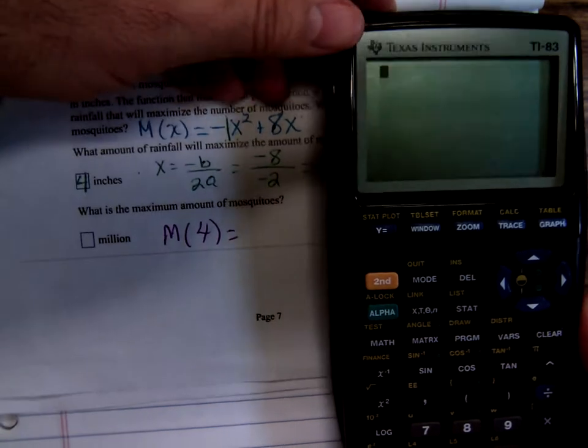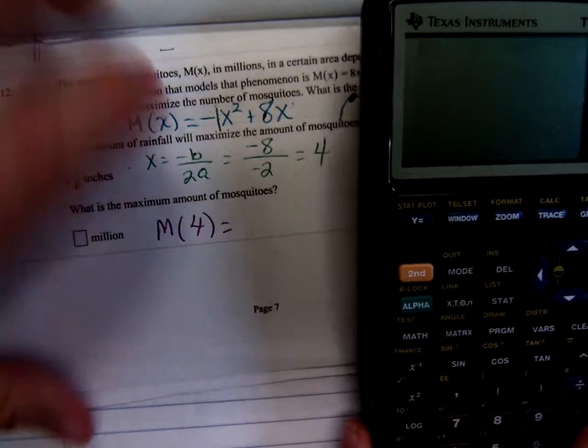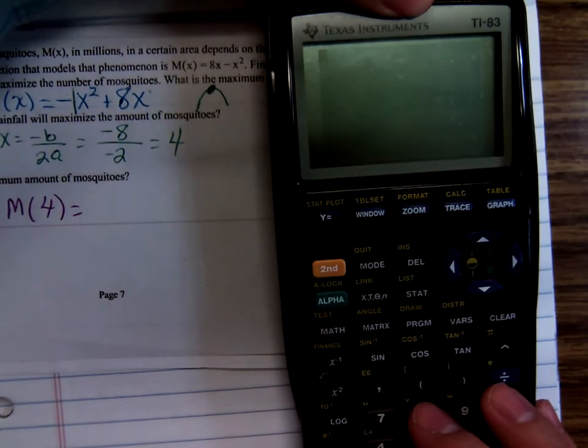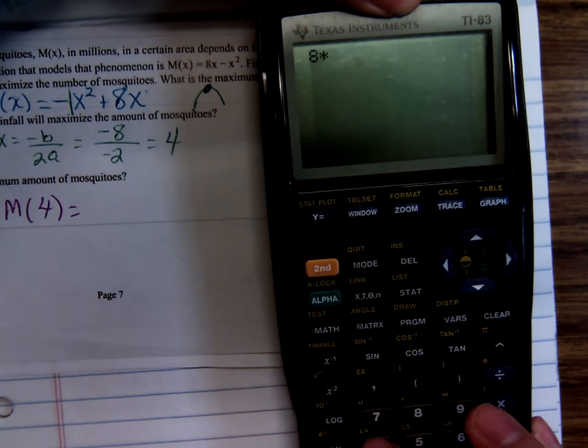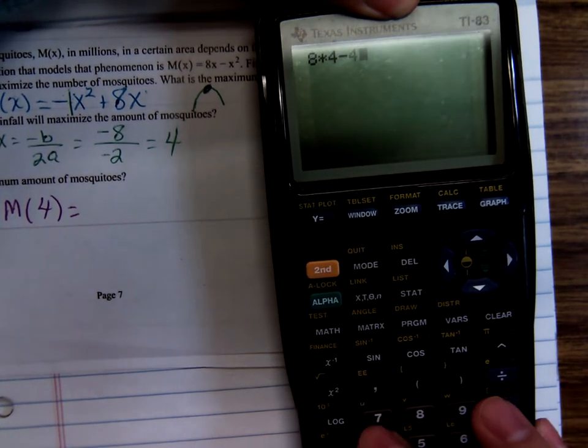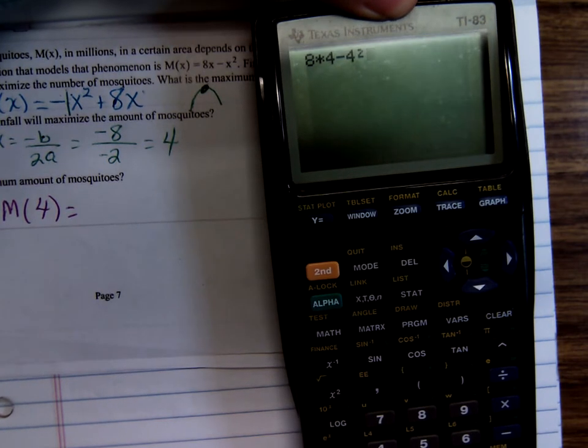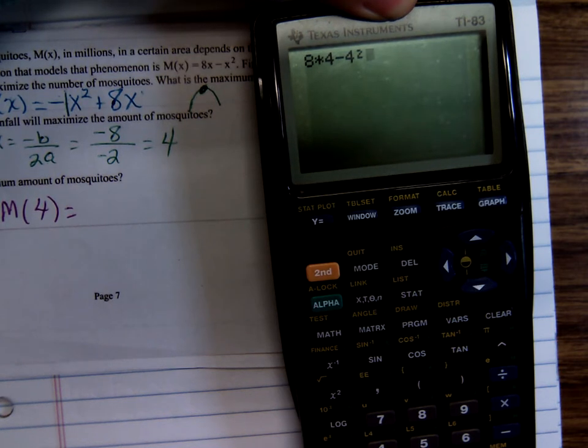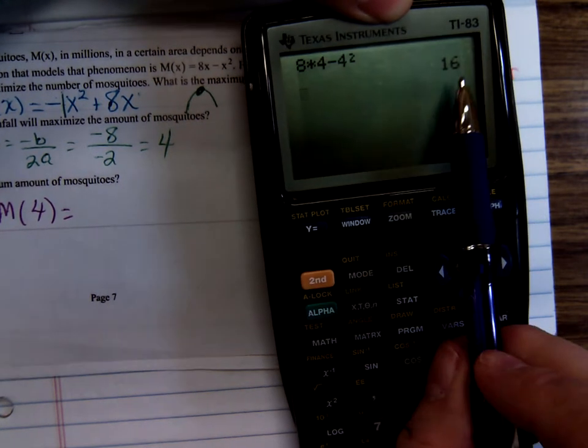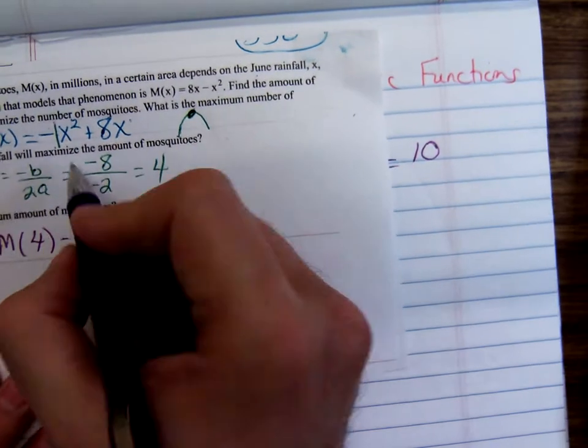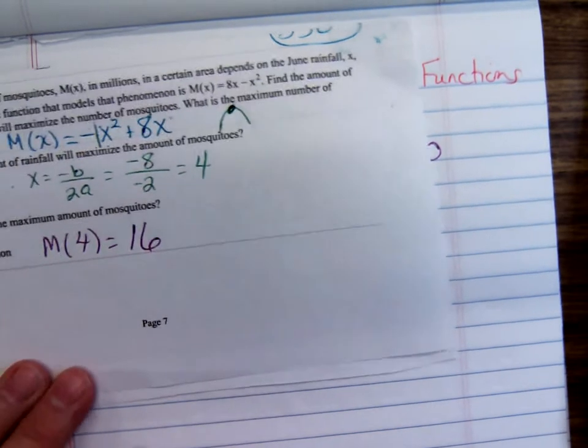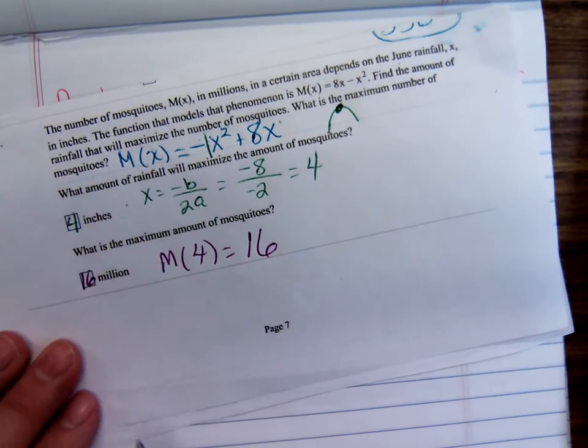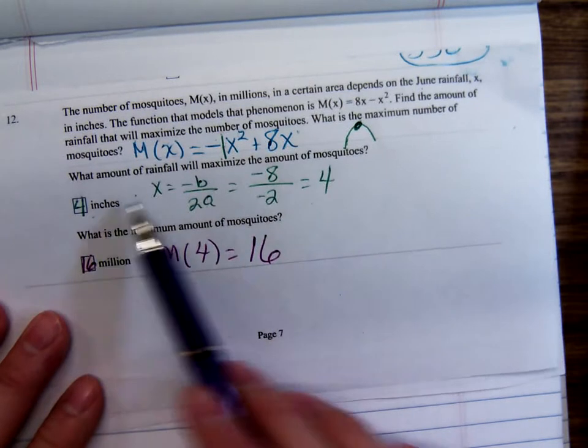So plug in 4: 8(4) - 4². 8 times 4 is 32, 4 squared is 16, 32 minus 16 is 16. So there will be 16 million mosquitoes in that area if they have 4 inches of rain during June.